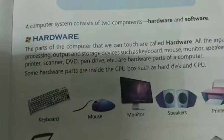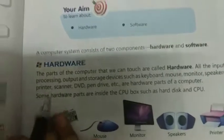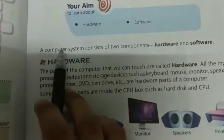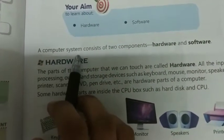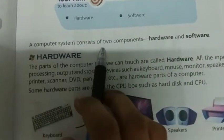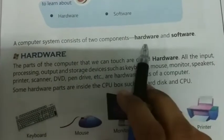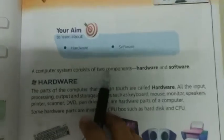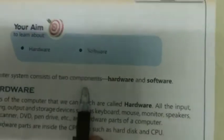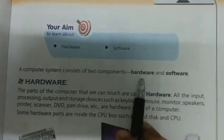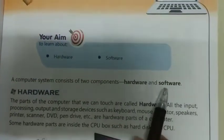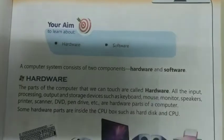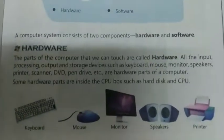Let's start. A computer system consists of two components: Hardware and Software. Computer में 2 components होते हैं — 2 घटक होते हैं — कौन-कौन से? Hardware and Software. इसके बारे में हमें आज study करना है।